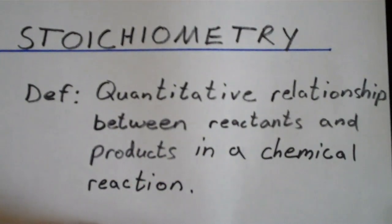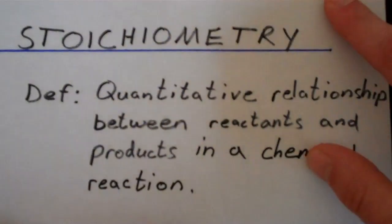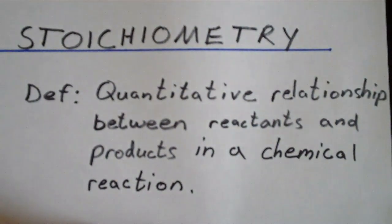Okay, so this video is going to be an introduction to stoichiometry. So why not start with the definition? Stoichiometry is the quantitative relationship between reactants and products in a chemical reaction.